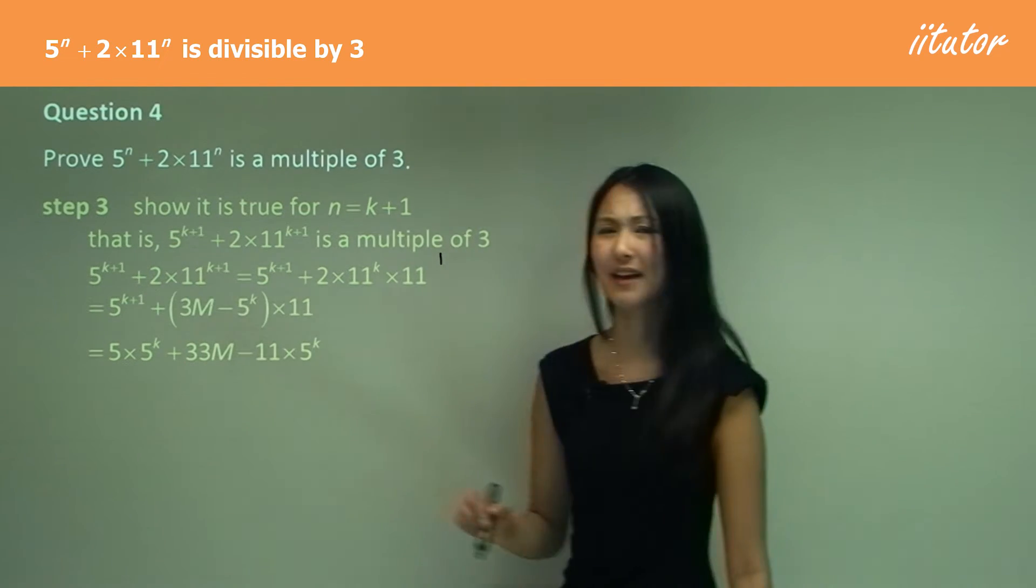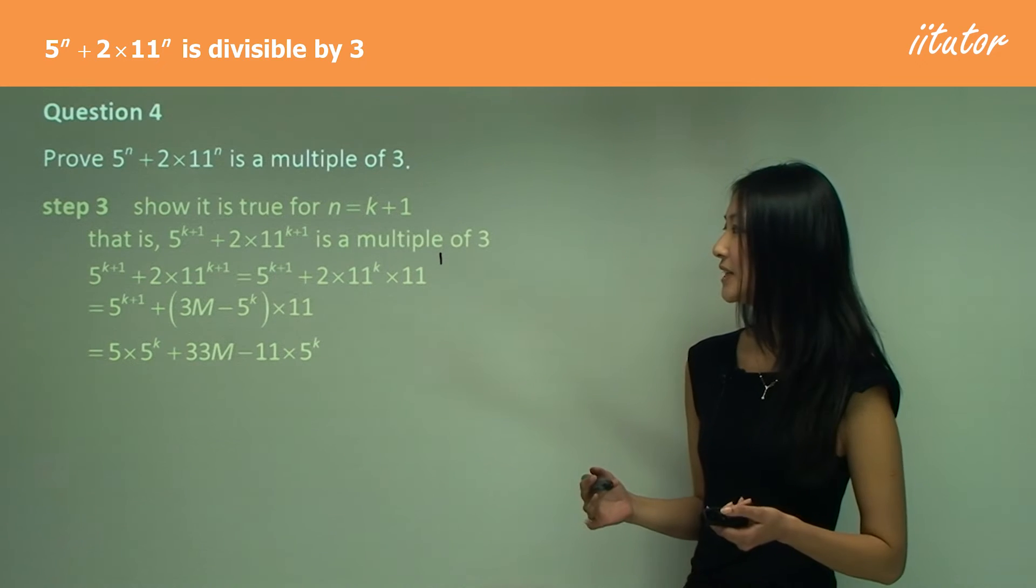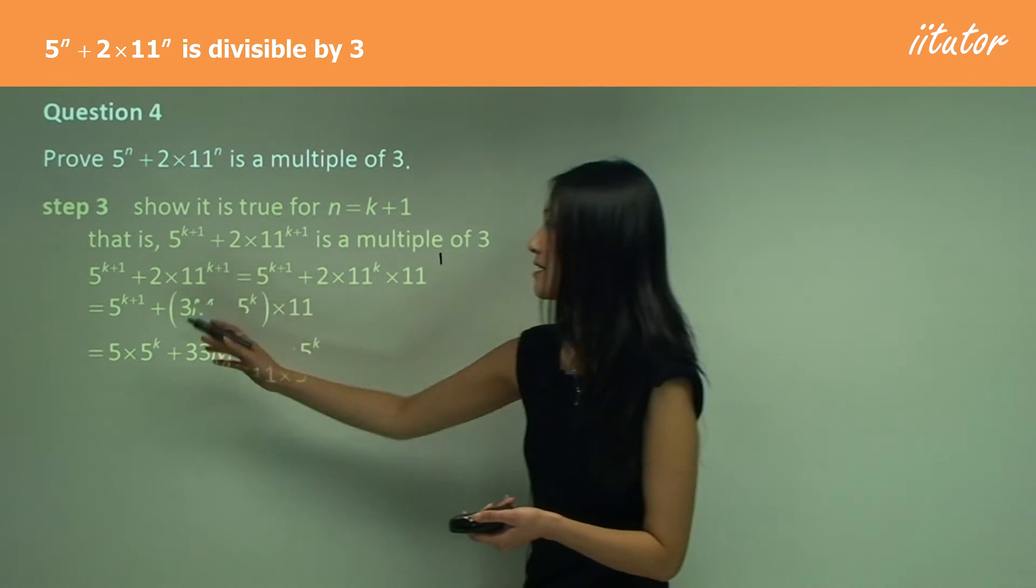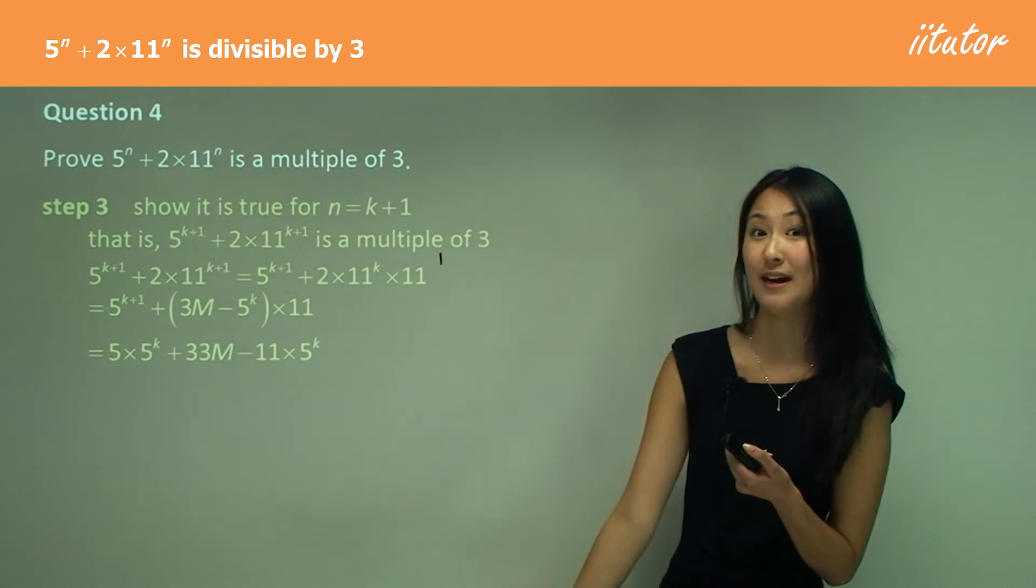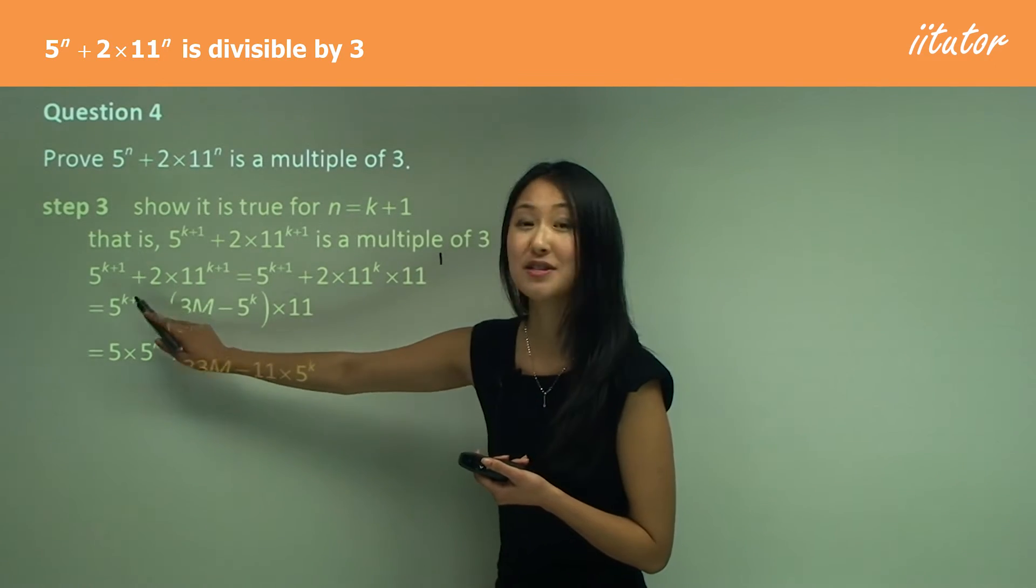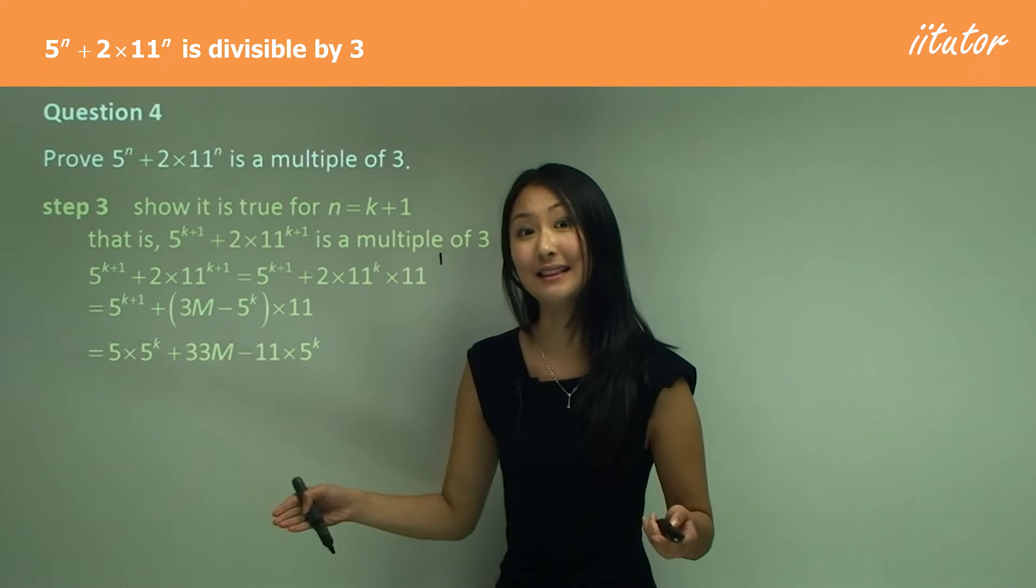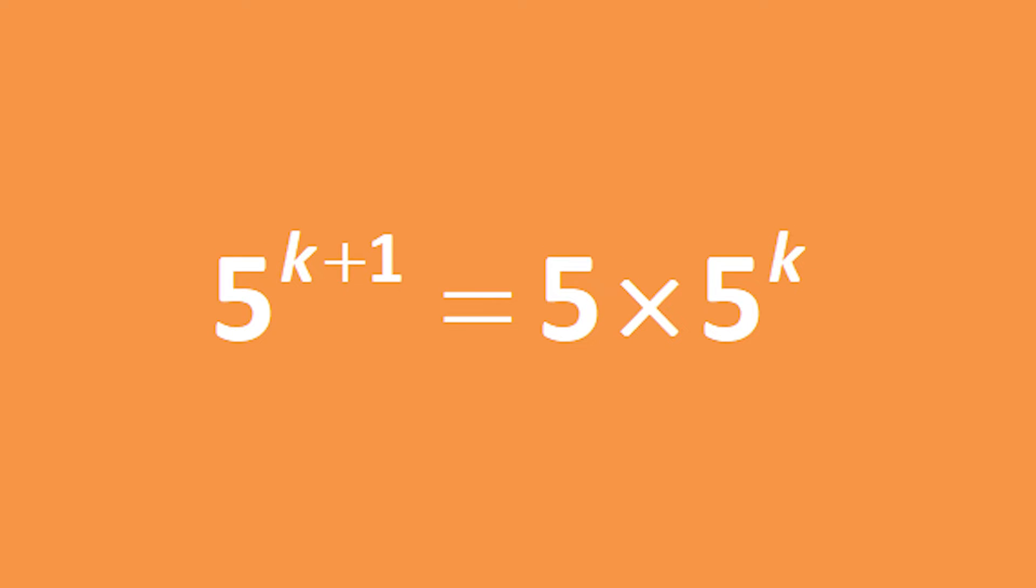If we have just 5^(k+1) there, that's really not going to help us that much. Because at the end of the day, what we want to be able to do is to take out a three. And we can't take out a three from that. So we know that we have to split that up into five to the power of one times five to the power of k.